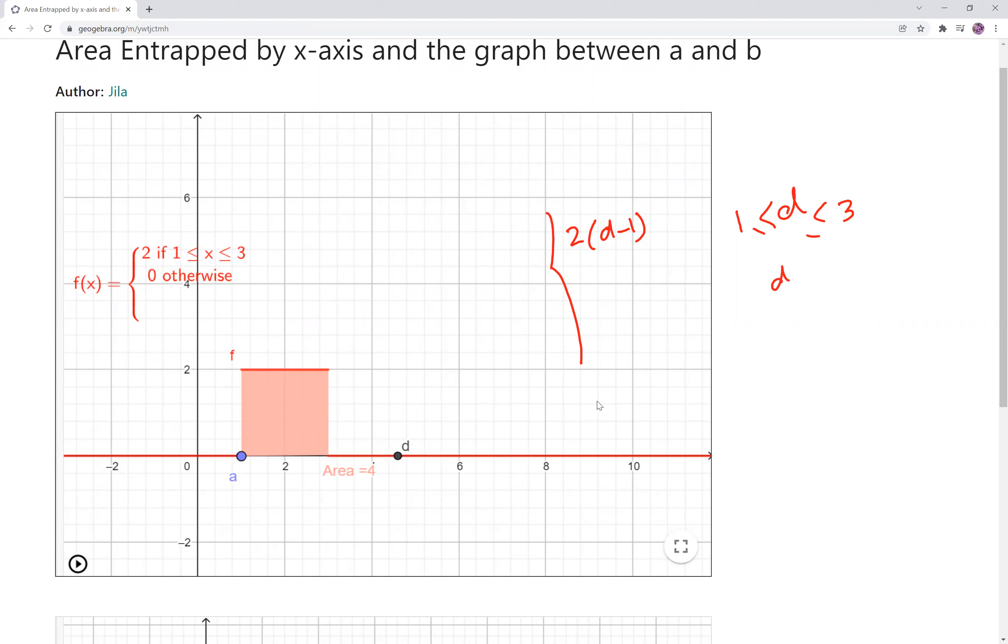It's going and going, and then it's not growing anymore when the full area is achieved right here. If D is bigger than 3, then area cannot go anymore because the function becomes 0. So here I'm going to write it down. If D is bigger than 3, the area is just going to be 2 times 2, which 3 minus 1 is 2, and so it's 4.